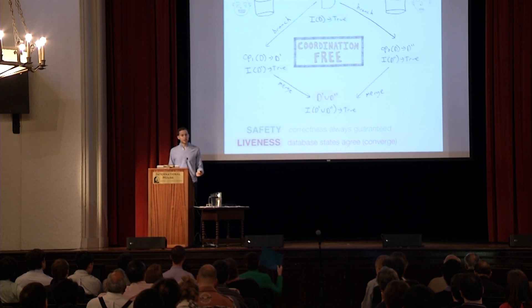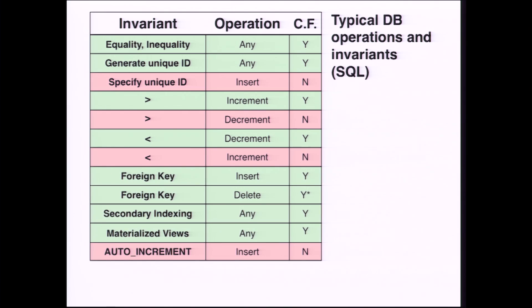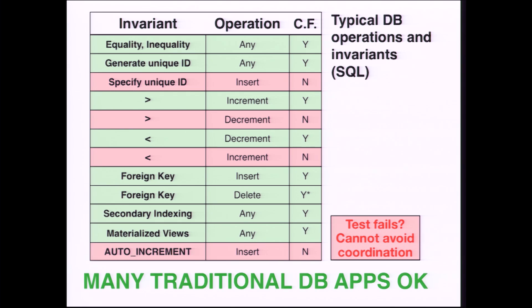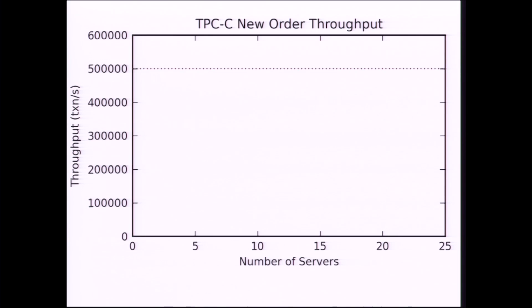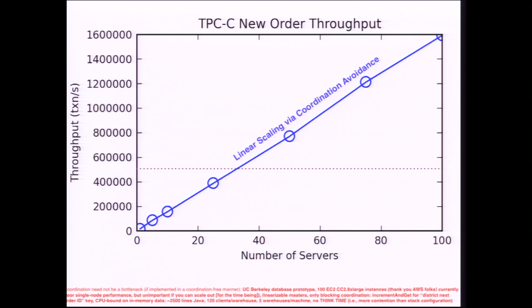We can actually apply this test to existing transactional applications and label various common invariants as either requiring coordination or not. Anything in red we know we have to coordinate — there's no possible way to implement these in a scalable manner — whereas anything in green we know it's okay. We've applied the green techniques to challenging transactional workloads like TPC-C. Oracle currently has the world record of 500,000 transactions per second, and when we implement them in a coordination-avoiding database prototype we're able to scale it pretty well. At 25 servers we're almost as good as Oracle, and since we're coordination-avoiding we can continue to scale. As we go from 25 to 100 servers, we not only match Oracle's performance but achieve roughly three times the world record performance for this particular application.